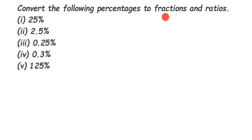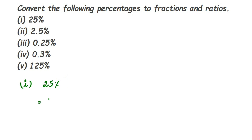Percentage — 'percent' means per hundred. So when a percentage is given, it means it is out of 100. If they have given 25%, it means 25 out of 100, that is 25 upon 100. Remember: whenever a percentage symbol is given, remove the percentage symbol and then divide by 100. That's it.